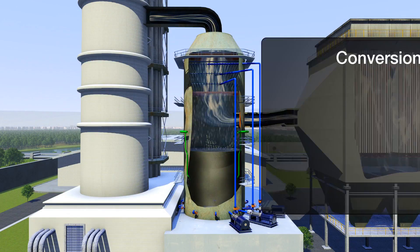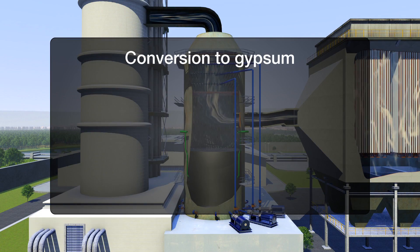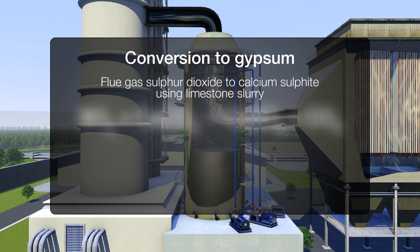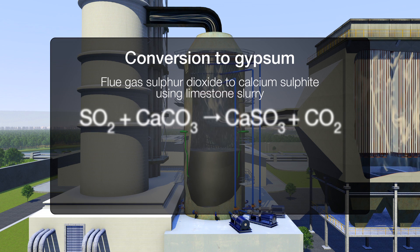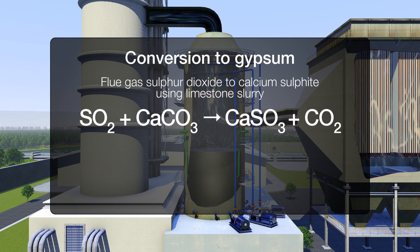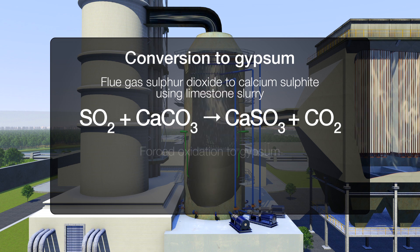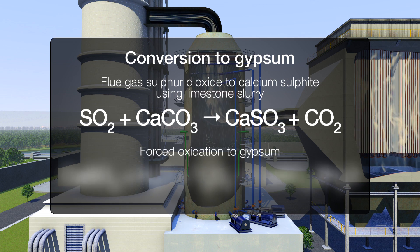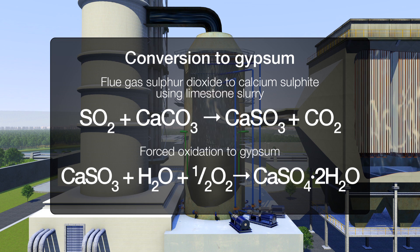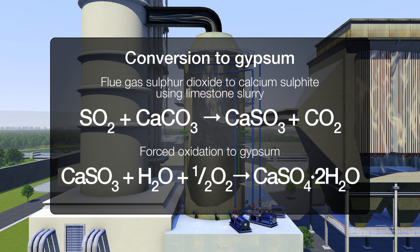In the case of gypsum, limestone slurry used in wet scrubbing processes combines with sulfur dioxide to produce calcium sulfite. When subjected to a forced oxidation process involving the addition of water and oxygen, the sulfite is converted into gypsum.